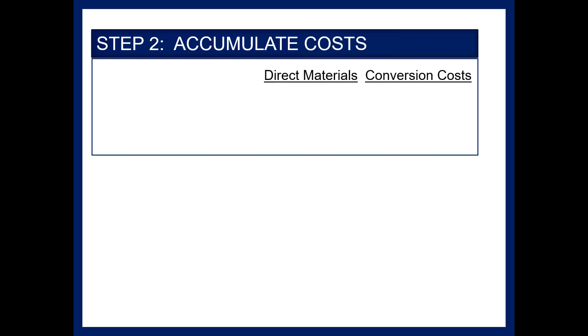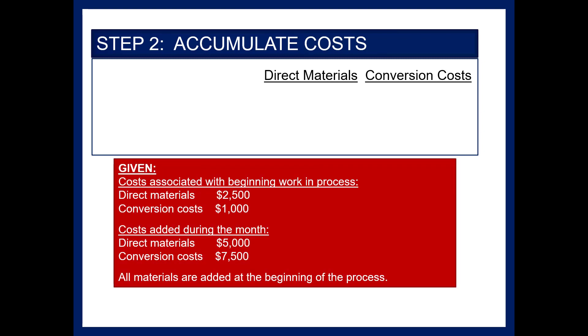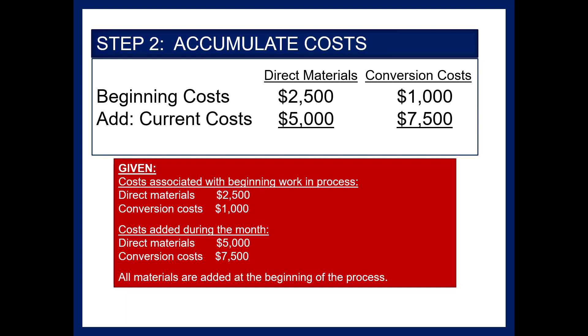Next we'll accumulate costs. In the weighted average method, you want to average all costs over all work done, so you include beginning cost plus current cost in this calculation. I've set up two columns because our ending work in process is 100% complete as to materials but only 50% complete as to conversion costs. Our total costs are $7,500 for materials and $8,500 for conversion costs.